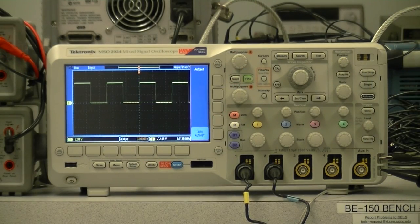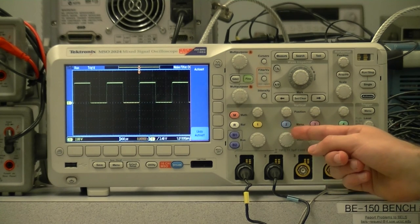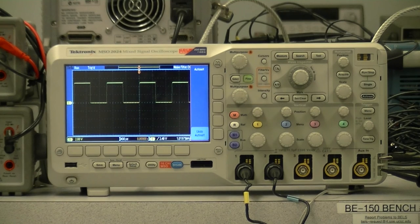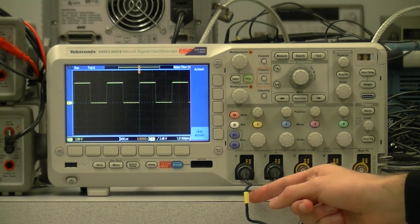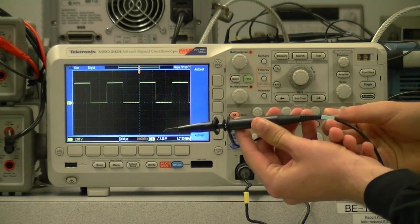Each channel of the oscilloscope has a specific color associated with it. Channel 1 is yellow, channel 2 is blue, channel 3 pink, and channel 4 green. Each probe has a little indicator on it to show you which channel it is. For example, here is the channel 2 probe with a blue indicator.